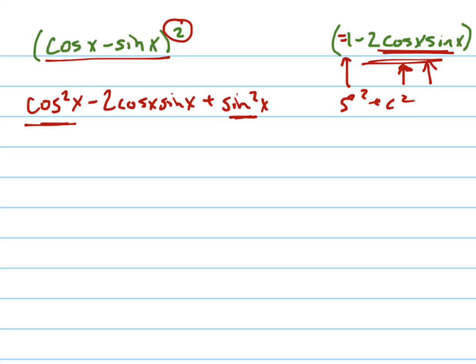Cosine squared plus sine squared, like I mentioned before, is equal to 1. It's a trig identity, so that's just 1 minus 2 cosine x sine x.